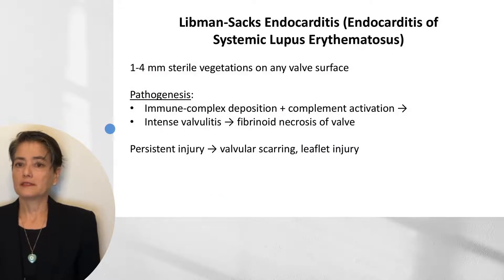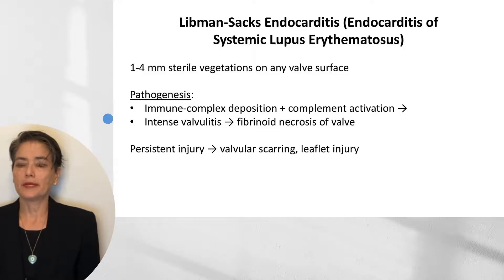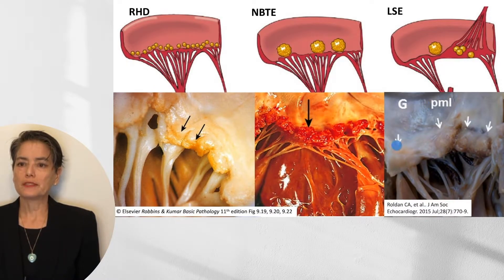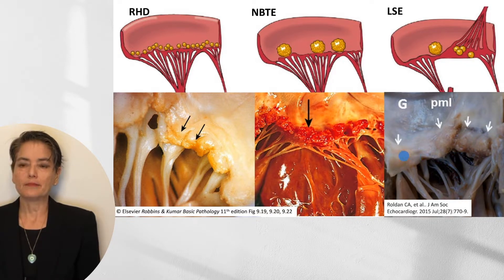Liebman-Sachs endocarditis, also known as endocarditis of systemic lupus erythematosus, features 1 to 4 millimeter sterile vegetations that can present on any valve surface or even on the heart wall itself. These are caused by immune complex deposition and complement activation, leading to intense valvulitis with fibrinoid necrosis of the valve. They don't tend to embolize, but persistent injury causes valvular scarring and leaflet damage so severe it can mimic rheumatic heart disease. Comparing RHD's minute vegetations, NBTE's sterile vegetations, and Liebman-Sachs's 1 to 5 millimeter vegetations highlights the key differences.